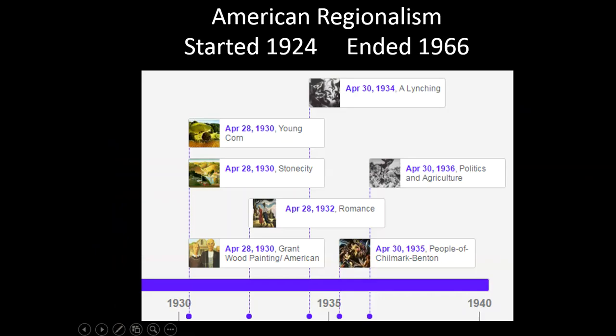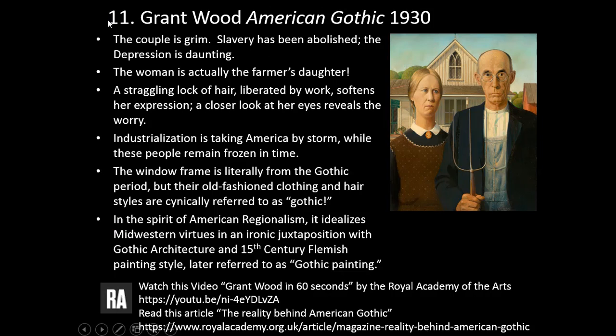Back in America, we have the movement called Regionalism, which started around 1924 and ended in 1966. Regionalism is basically painting scenes from the different regions of America, based on life in those regions. One of the most famous examples is number eleven — Grant Wood's American Gothic, 1930.